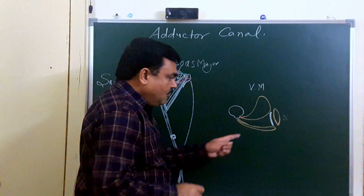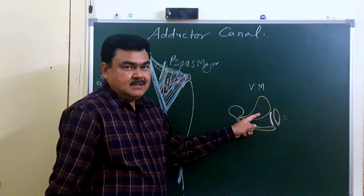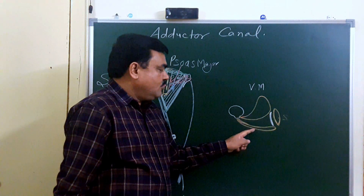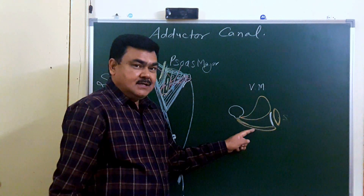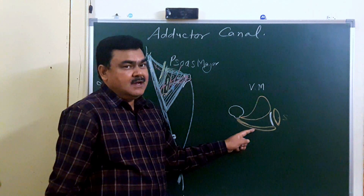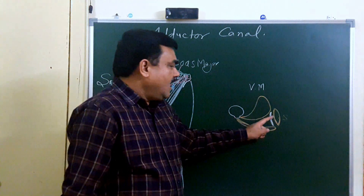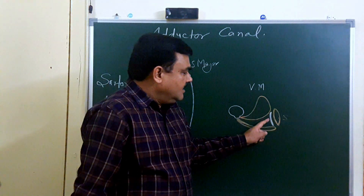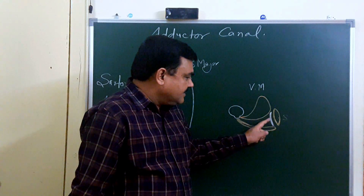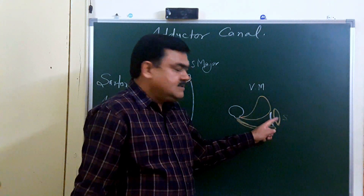The boundaries of the adductor canal are: anteriorly, vastus medialis; posteriorly, adductor longus in the upper part and adductor magnus in the lower part; and medially, there is a fibrous sheath which is covered by sartorius.